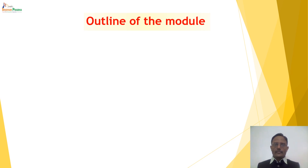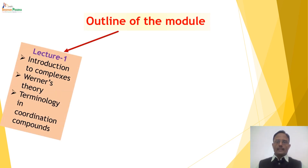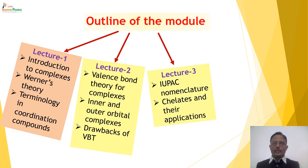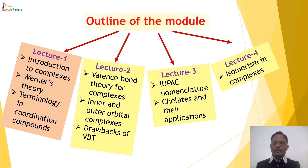The outline of this module is divided into four lectures. In the first lecture, we will discuss Introduction to Complexes, Werner's Theory, and Terminology used in Coordination Compounds. In the second lecture, Valence Bond Theory of Complexes and its limitations. In the third lecture, IUPAC nomenclature of Complexes and Introduction to Chelates. And in the fourth lecture, Isomerism in Complexes.